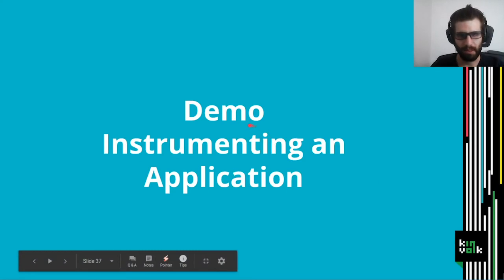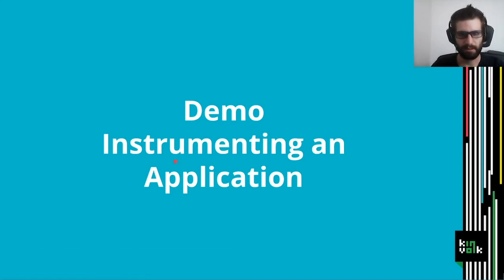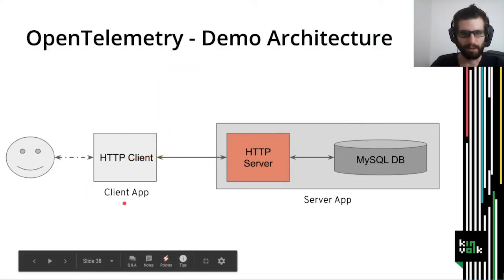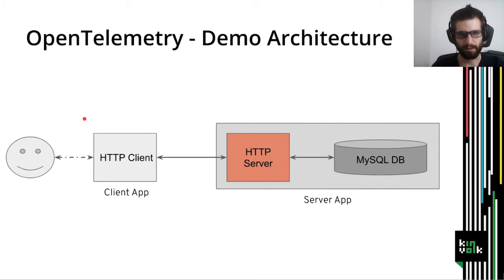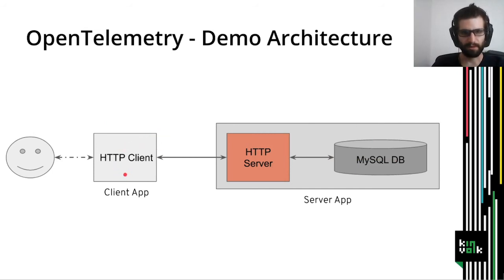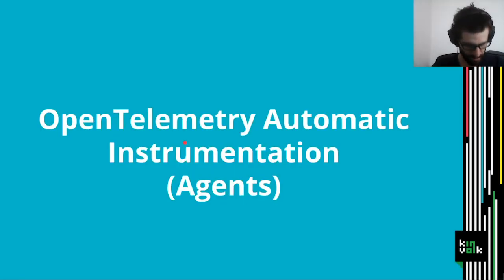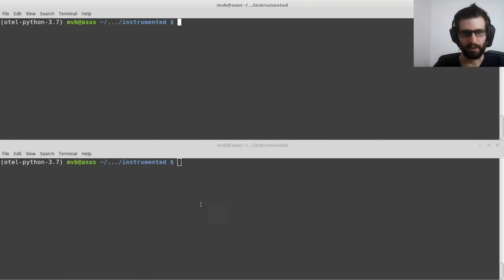Let me show you a demonstration of how to instrument an application using OpenTelemetry. I'm going to show a simple demo composed of two different applications: a client application and a server application. What the application does is the user passes a country and the application replies with what continent that country is in. The client passes the request to an HTTP server, and the HTTP server uses a database to get this information.